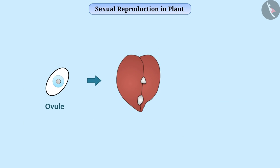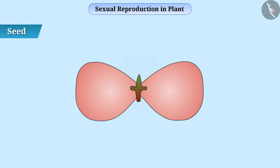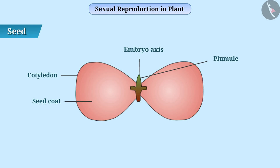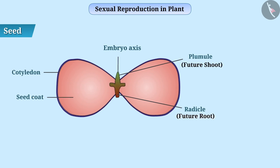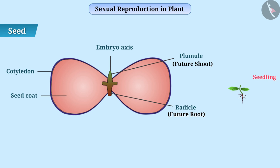The ovule develops a hard covering and becomes a seed. The seed protects the embryo. A seed usually consists of a seed coat, cotyledons, and an embryo axis. The plumule of the embryonic axis is the future shoot and the radicle is the future root. Cotyledons are inflated structures in which the food of the embryo is preserved. In favorable conditions, the embryo develops into a seedling, which we call germination. The seedling then develops and transforms into a new plant.